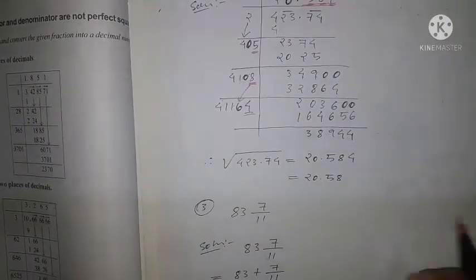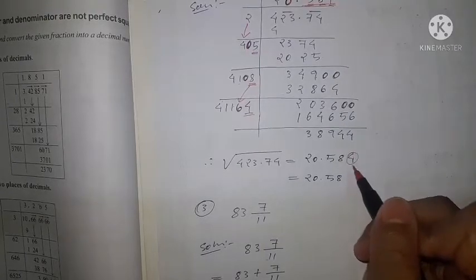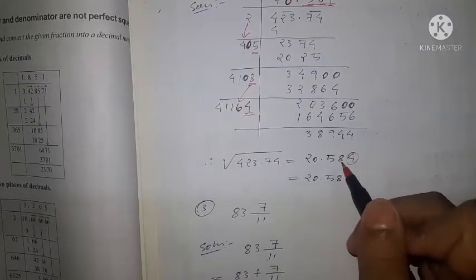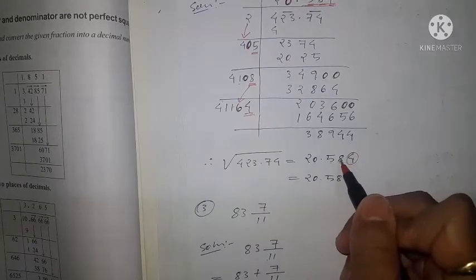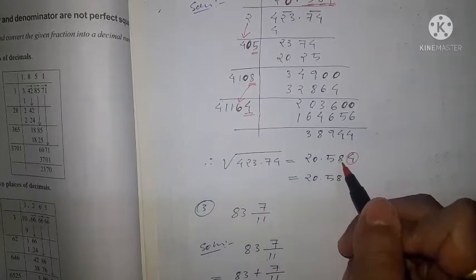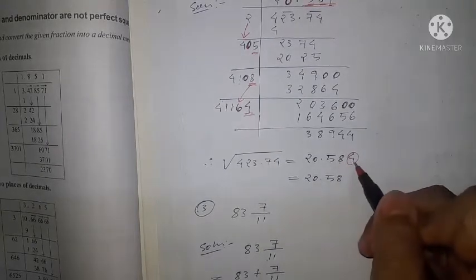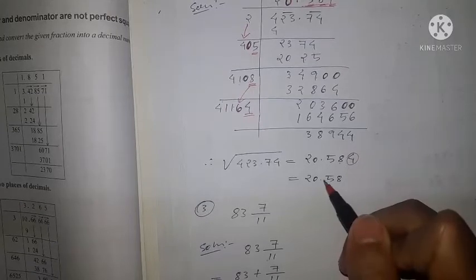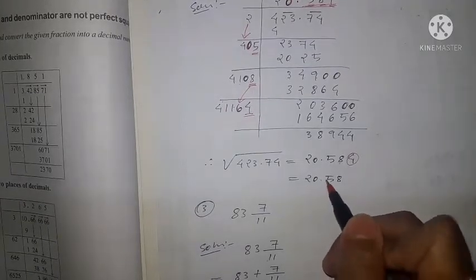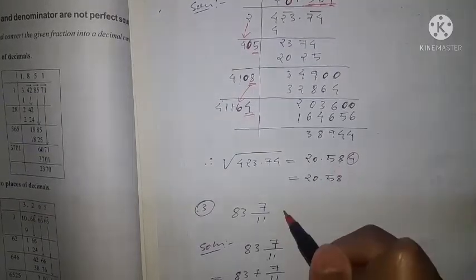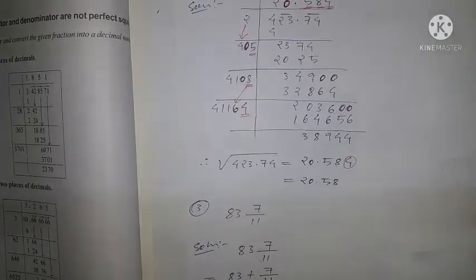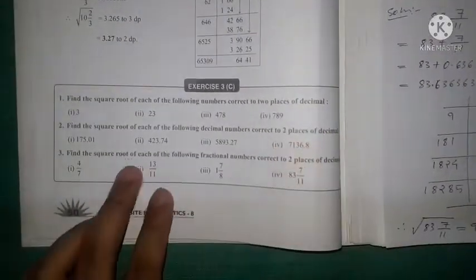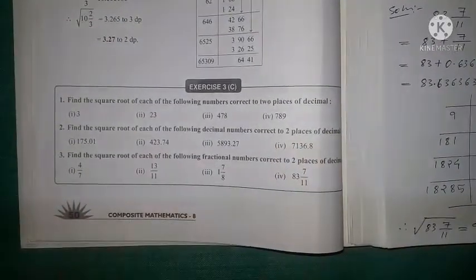The third digit is 4, which is less than 5, so we cannot increase the 8. Since the third digit is 4, we write the answer as 20.58. In the same manner, you can do the rest.